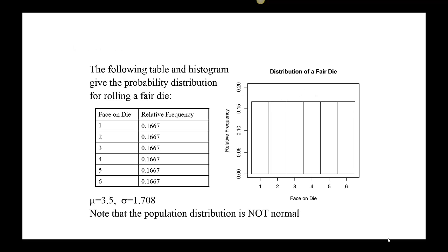The problem we are going to deal with is rolling a fair die and creating a relative frequency table. The faces on the die are 1, 2, 3, 4, 5, and 6. Each one has an equal chance of appearing when we roll the fair die. Therefore, the relative frequency is one-sixth, or approximately 0.1667.